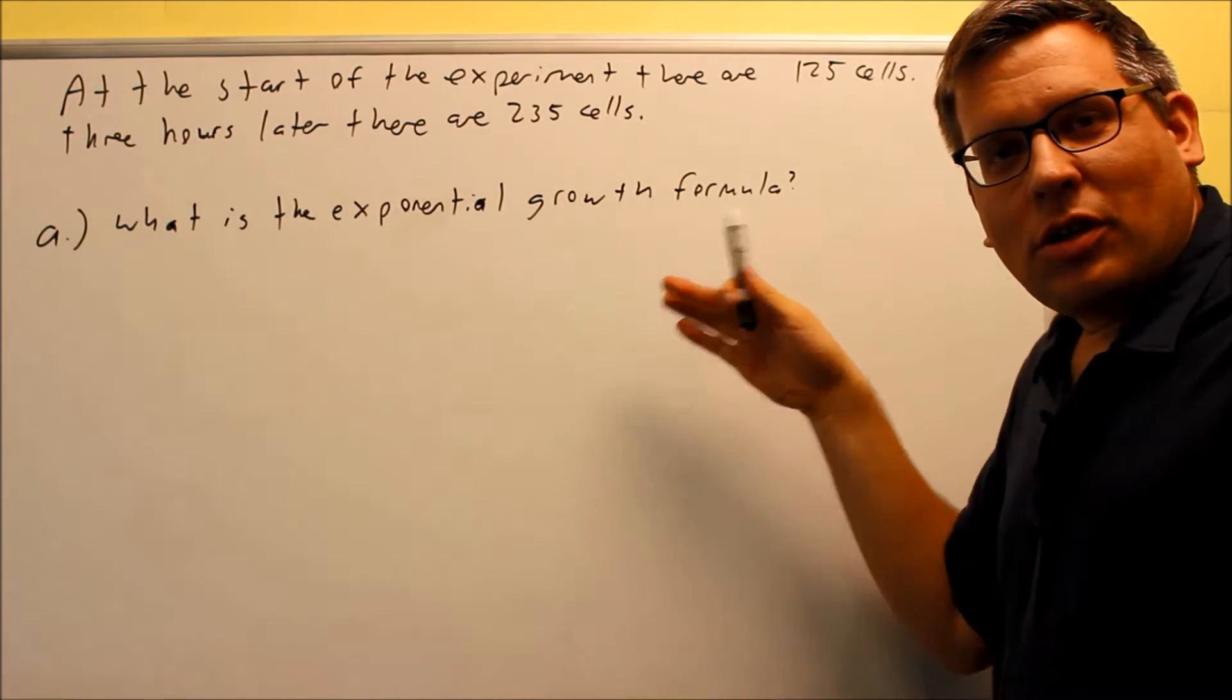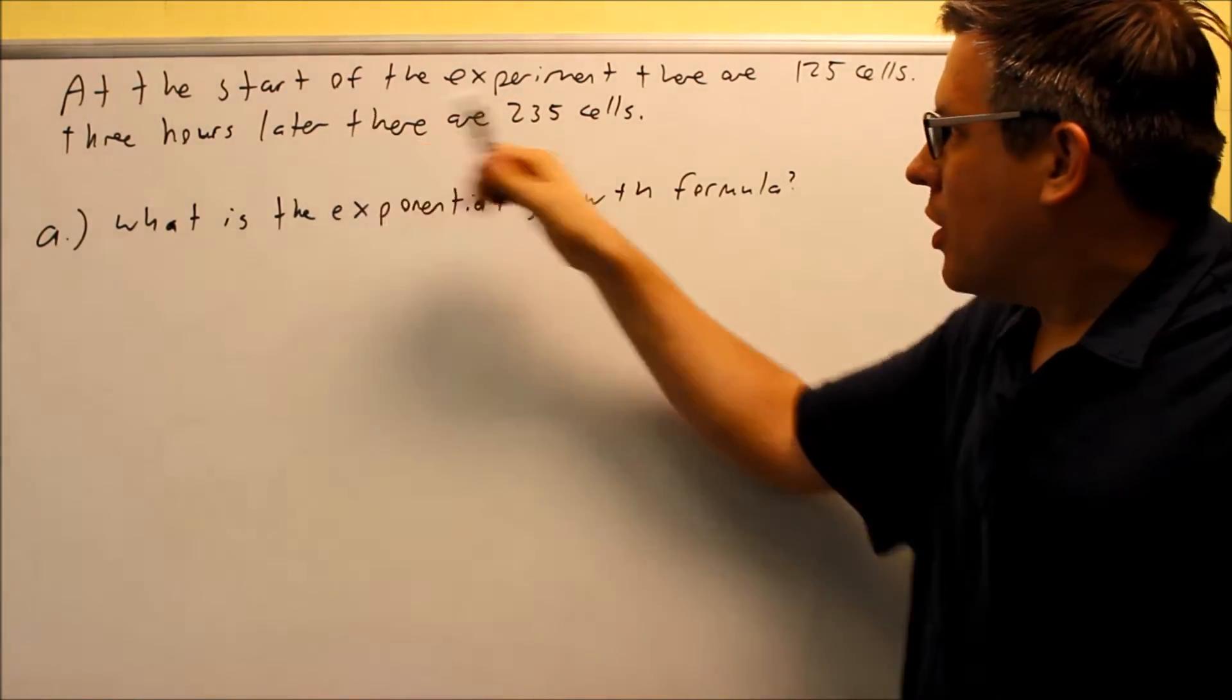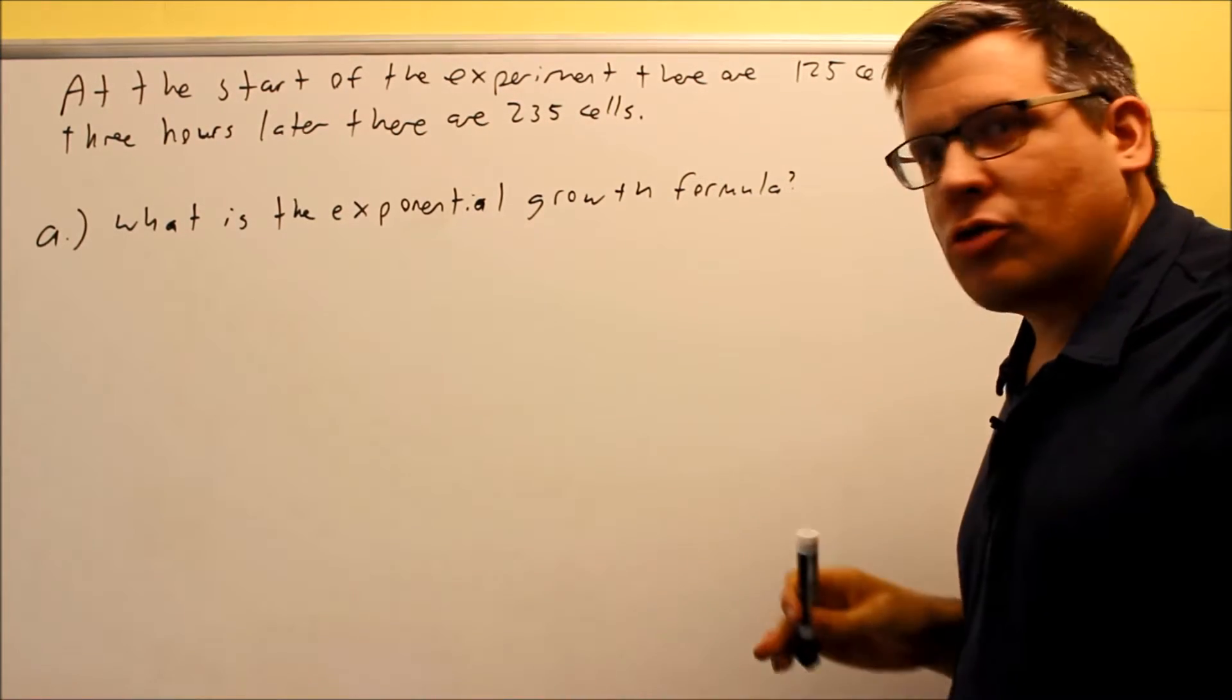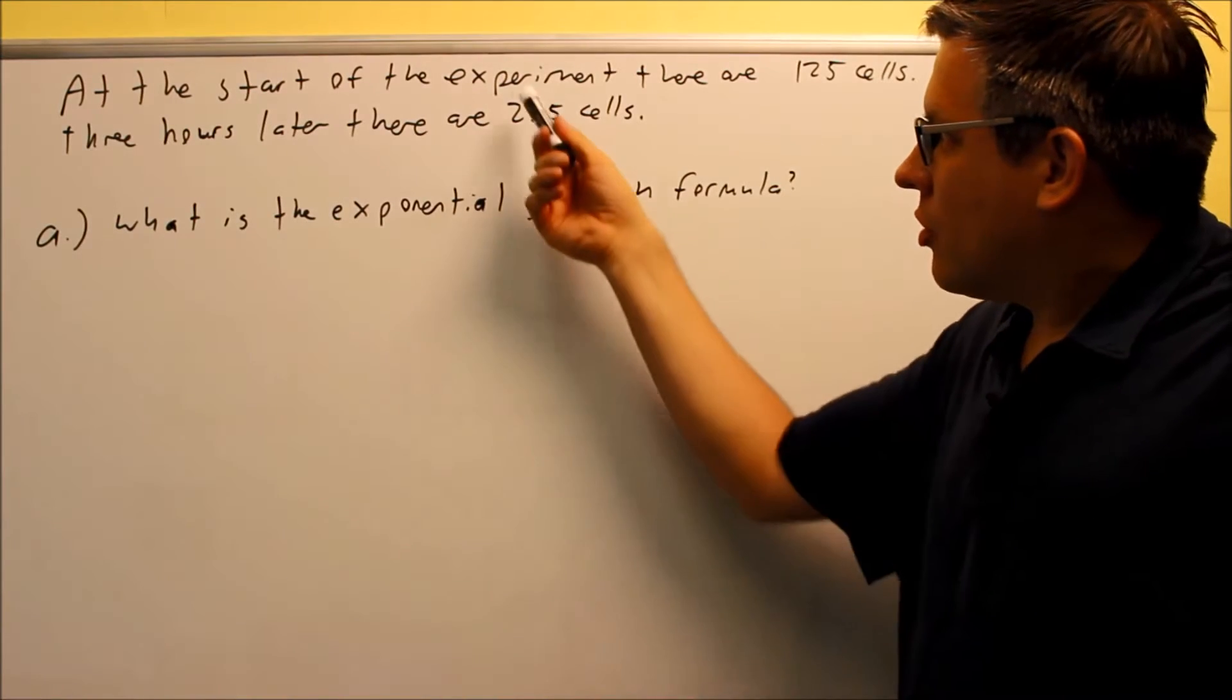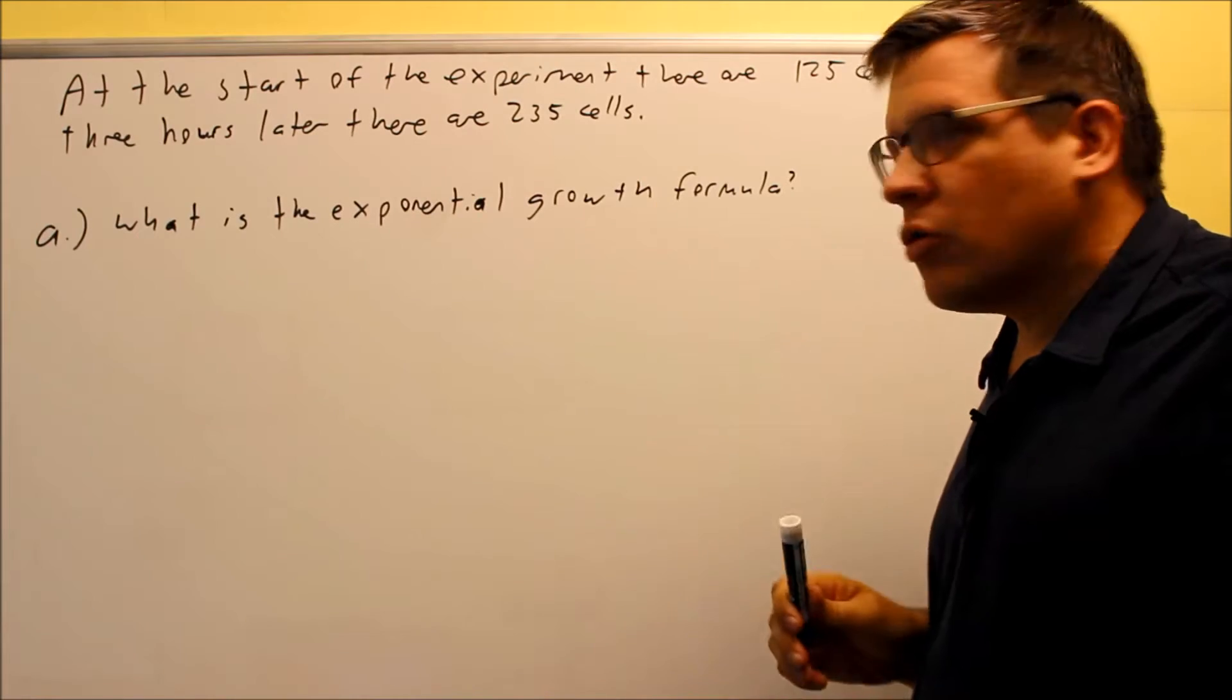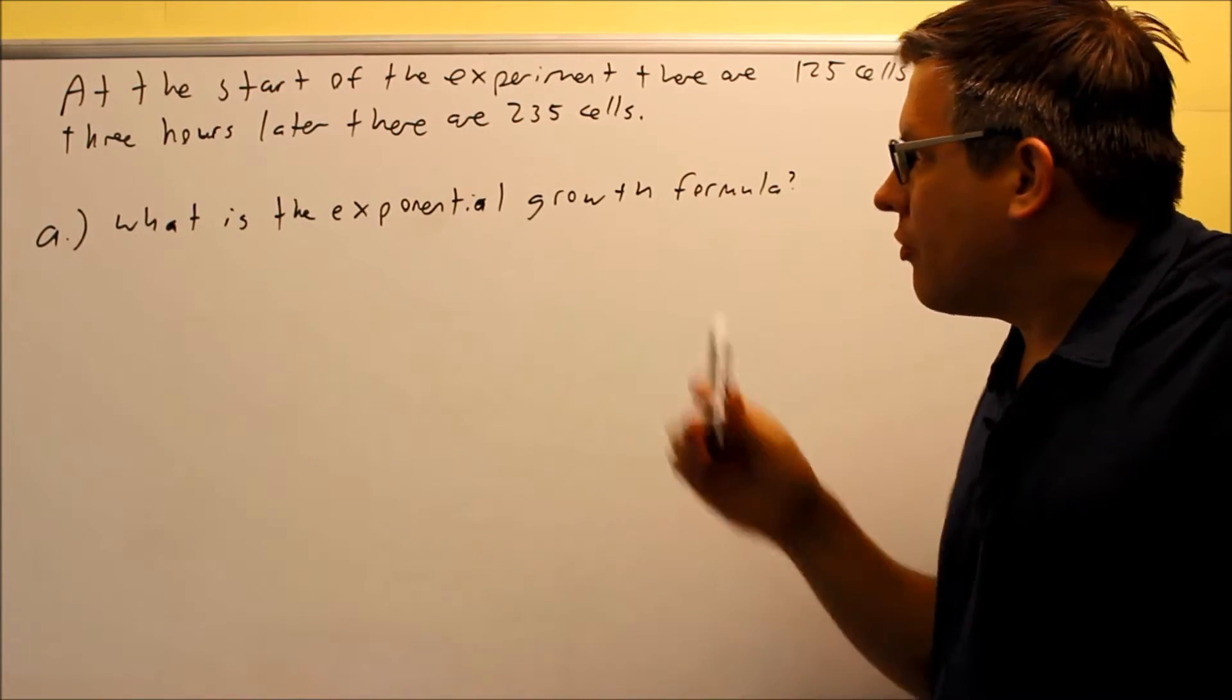Okay, for this problem, we are given some information about cell growth, and we want to know the exponential growth formula. So at the start, initially there's 125 cells, then it says three hours later, we're told that it goes to 235 cells.